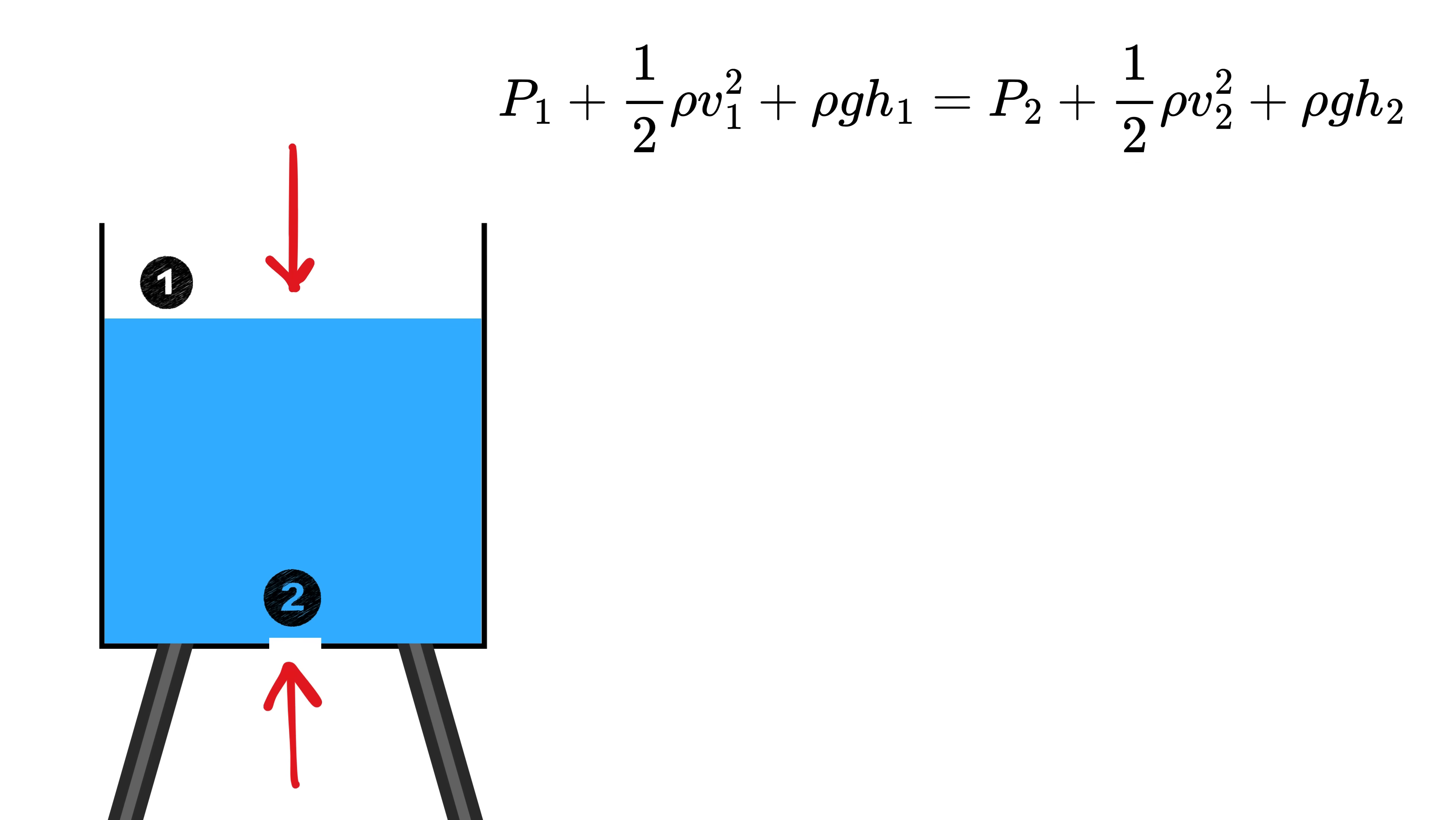Now, both the top surface of the water and the hole at the bottom are open to air, so the pressure acting on both is just the normal atmospheric pressure, which means P1 equals P2 equals P atmosphere. Therefore, we can simply cancel it out from the equation.